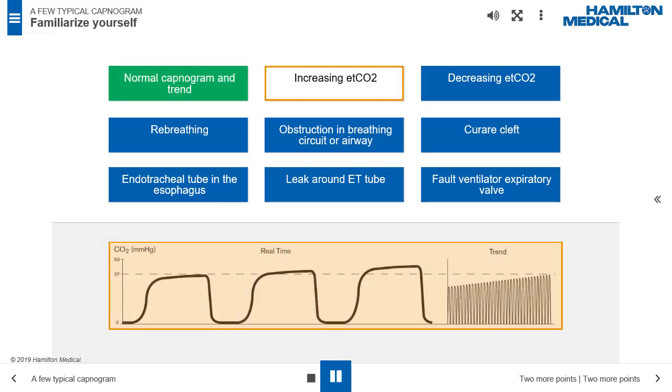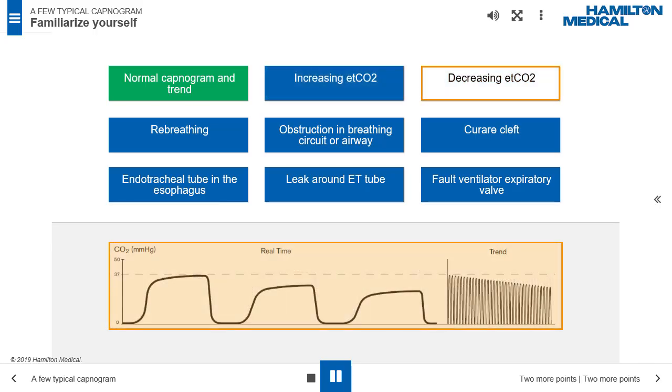Normal capnogram indicates correct tracheal tube placement as well as proper ventilation. Increasing ETCO2, possible causes include hypoventilation, increased metabolic rate and rapid rise in body temperature. Decreasing ETCO2, possible causes include hyperventilation, decreased metabolic rate and fall in body temperature.